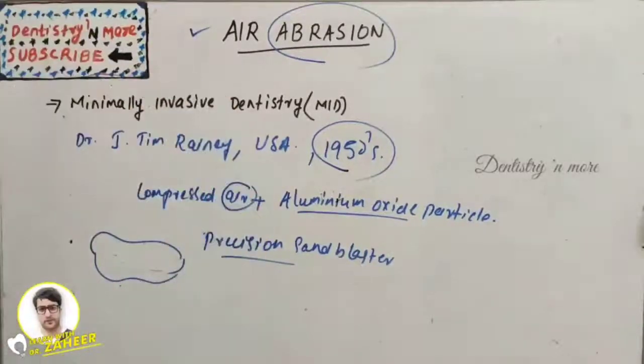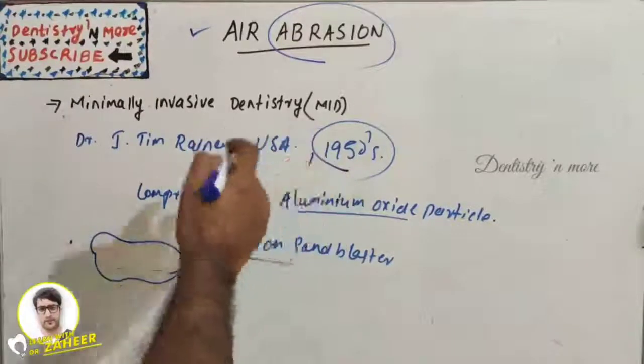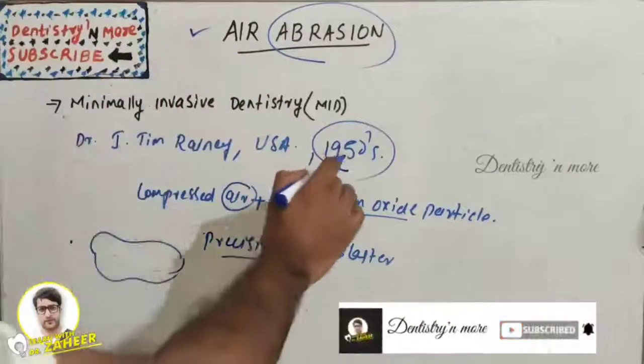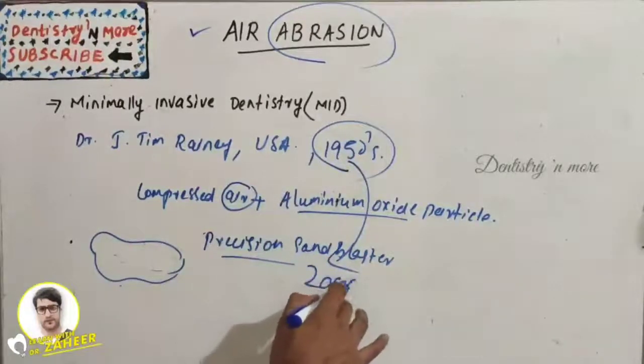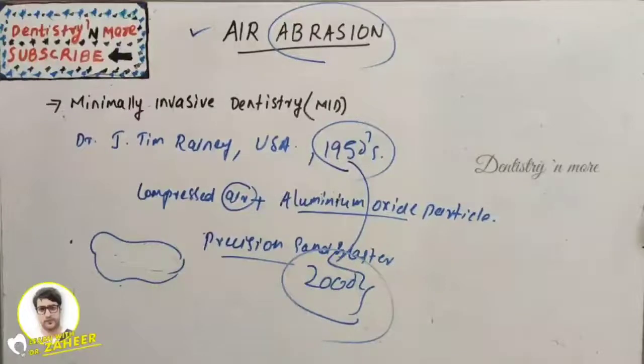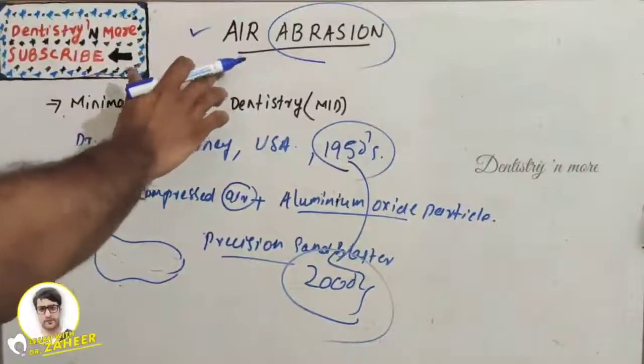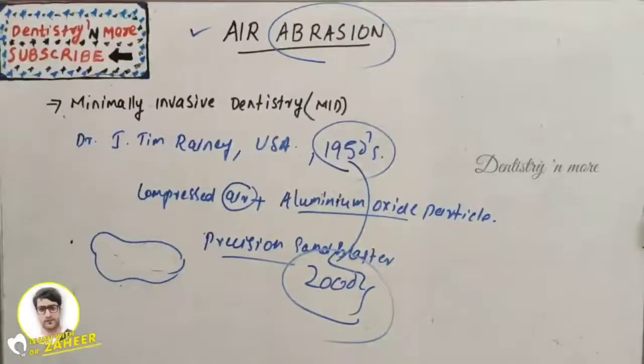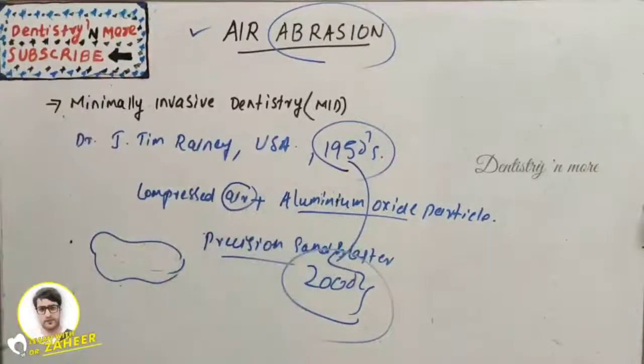When it was introduced in 1915, dentistry did not have bonded restorative material, direct bonding restorative material, or high velocity suction apparatus. Once dentistry was equipped with all these, the same technology came to 2000 or 1990s as air abrasion because the technology was the same - aluminum oxide through compressed air - but only the equipment was present during the newer times.